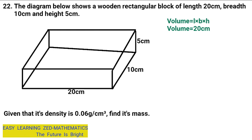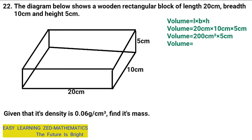Volume equals 20 cm multiplied by 10 cm, which gives us 200 cm squared, multiplied by 5 cm. That gives us 1,000 centimeters cubed. So the volume of this wooden block is 1,000 centimeters cubed.